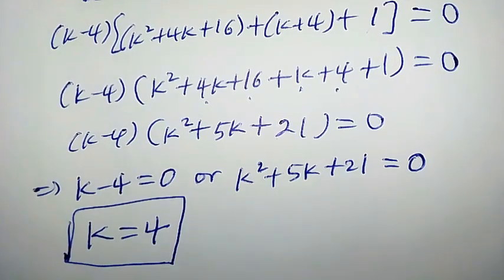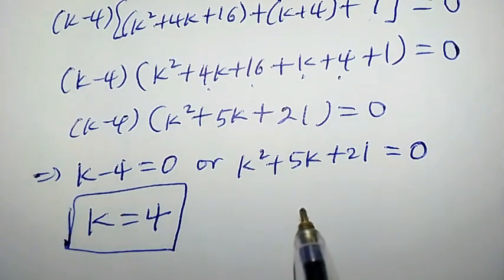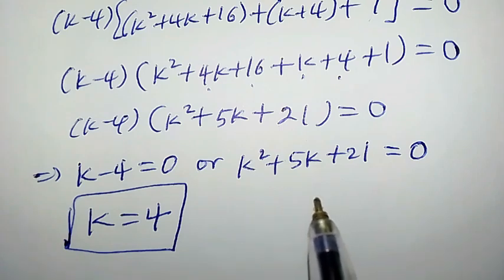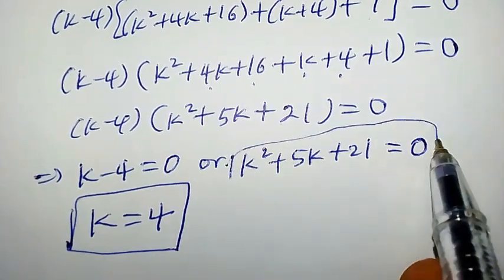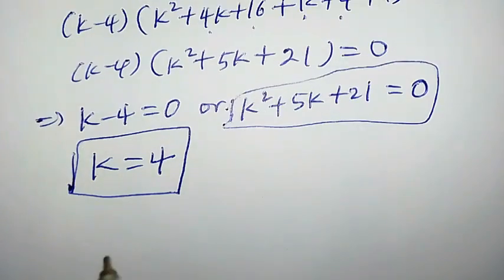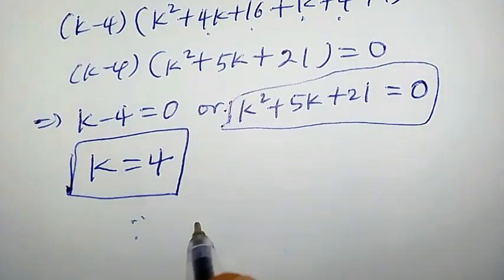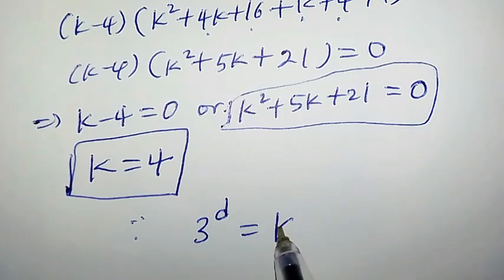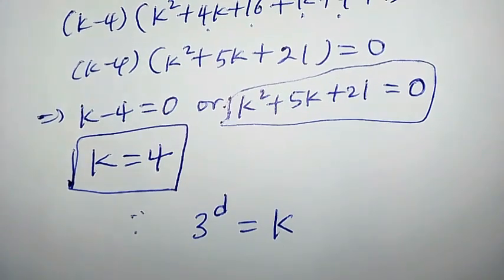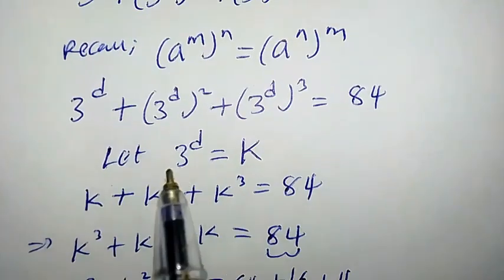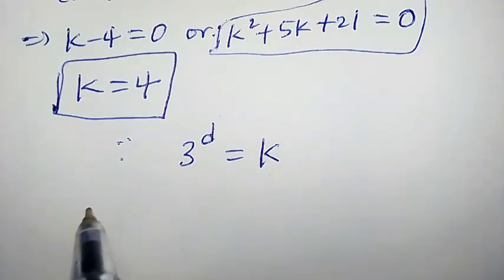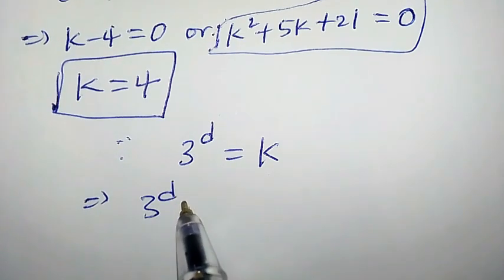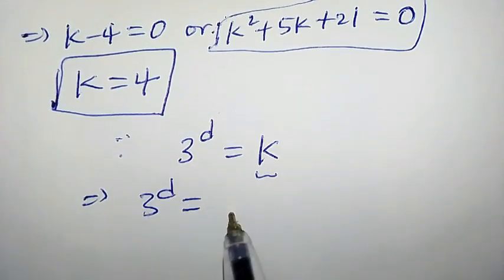For the quadratic equation k squared plus 5k plus 21 equals 0, if we try to solve it we get a complex solution which is not real. Since we are only dealing with real solutions, we ignore this second equation. Since 3 to the power of d equals k from our substitution, and k equals 4, we have 3 to the power of d equals 4.